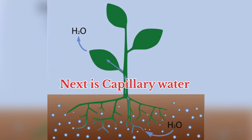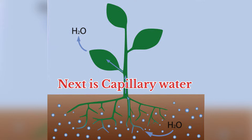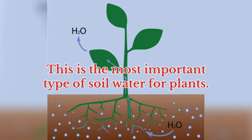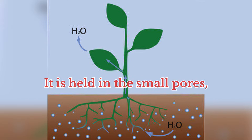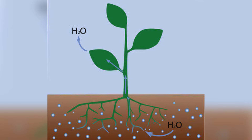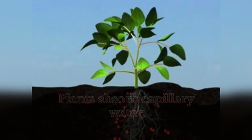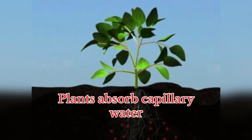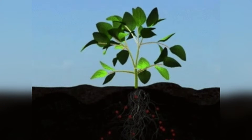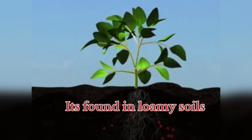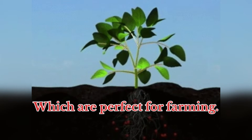Next is capillary water. This is the most important type of soil water for plants. It is held in the small pores, or micropores, of the soil by capillary action. Plants absorb capillary water for growth and development. It's found in loamy soils, which are perfect for farming.